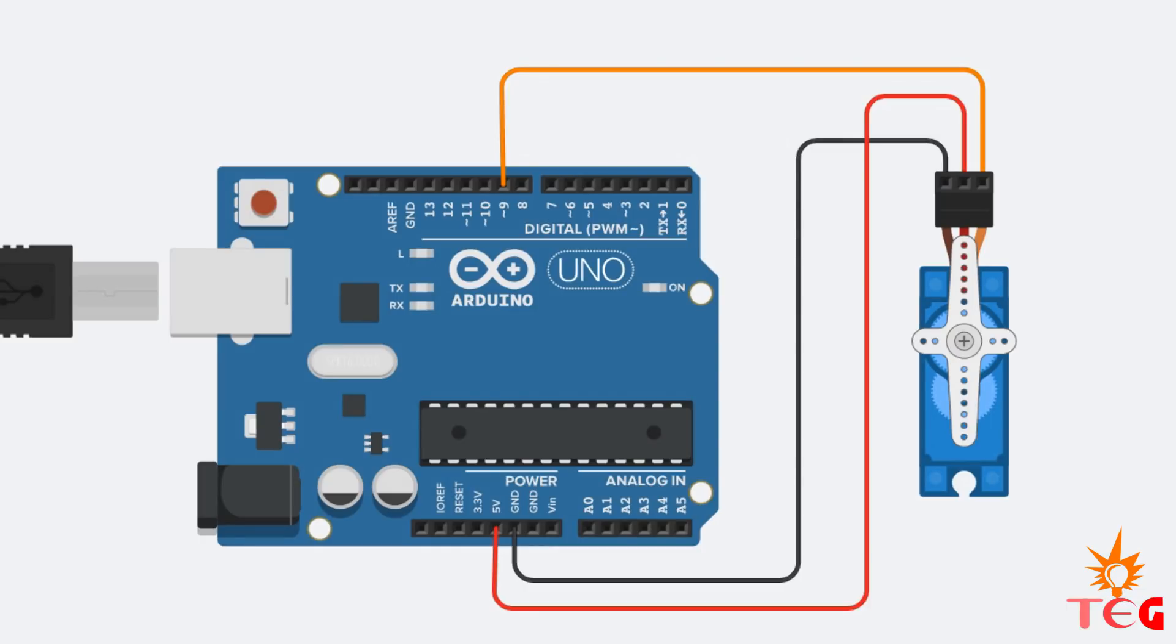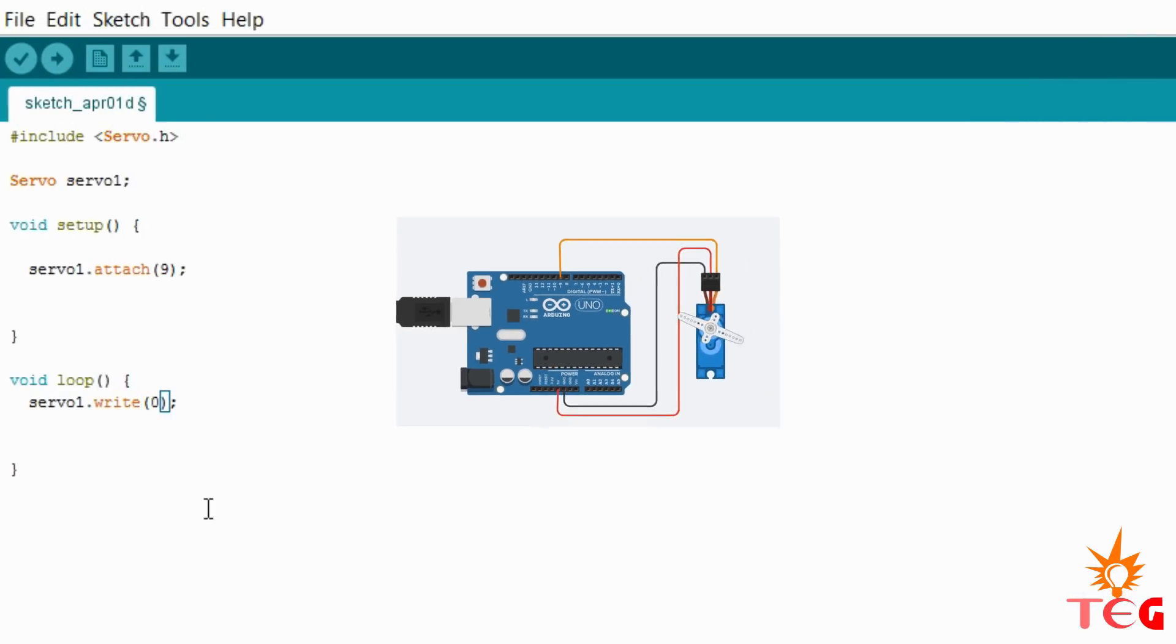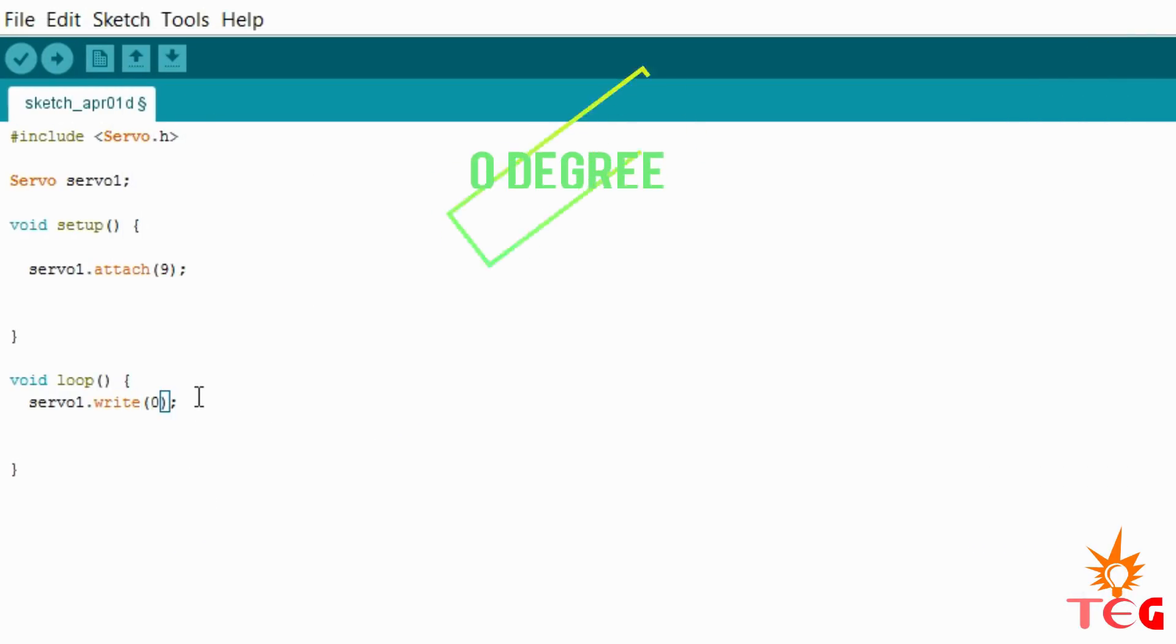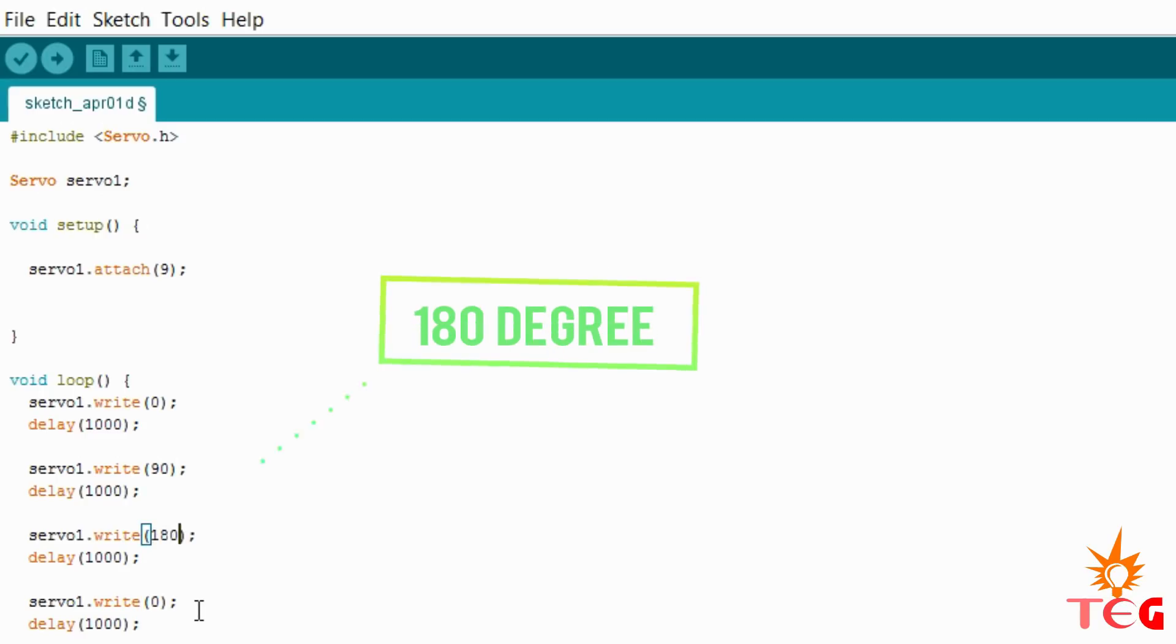Now let's try to rotate the motor in each of the three defined degree positions. First 0 degree, then 90 degree, then 180 degree, then back to 90 and 0. I want my servo motor to start from 0 degree, so I'll define 0 degree here. Now after 0 degree, I want it to go to 90 degree. So I'll define 90 degree here. After 90 degree, it should go to 180 degree position. So define 180 degree here. Now when it's 180 degree position, I want it back to 90 degree position. So define 90 degree here.